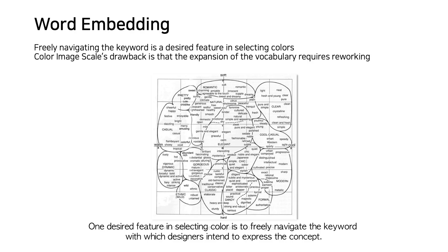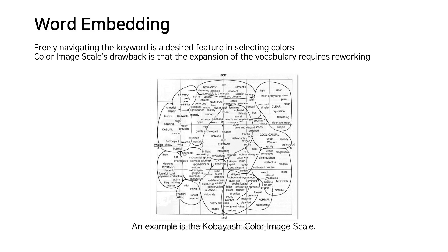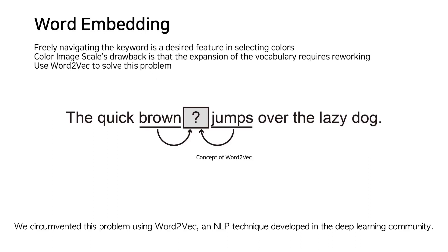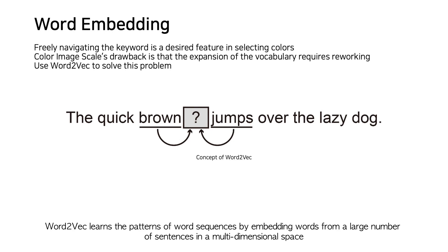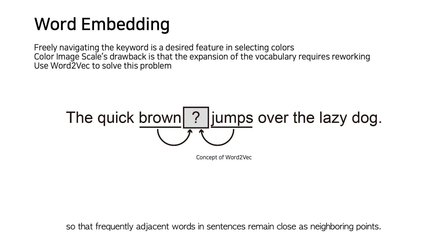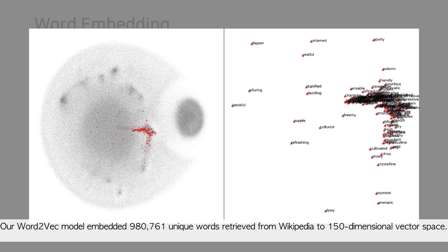One desired feature in selecting color is to freely navigate keywords with which designers intend to express a concept, as in the Kobayashi color image scale. However, the drawback is that expanding the vocabulary requires reworking. We circumvented this problem using Word2Vec, an NLP technique developed in the deep learning community. Word2Vec learns the patterns of word sequences by embedding words from a large number of sentences in a multi-dimensional space, so that adjacent words in sentences remain close as neighboring points. Our Word2Vec model embedded 980,761 unique words retrieved from Wikipedia into a 150-dimensional vector space.